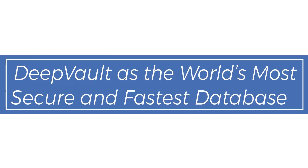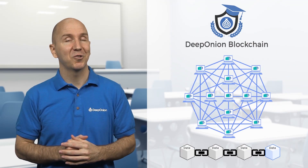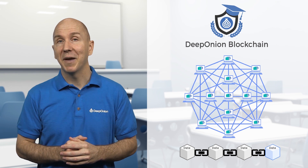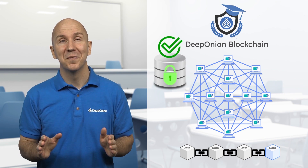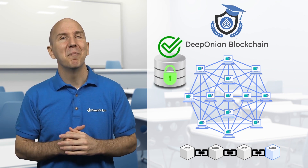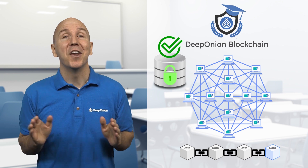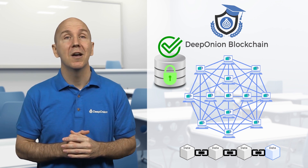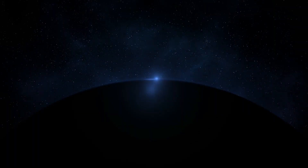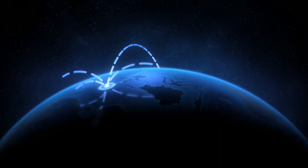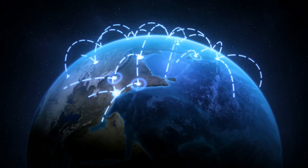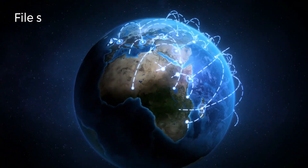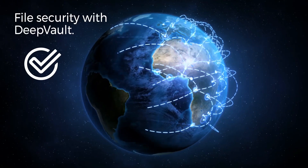DeepVault as the world's most secure and fastest database. The DeepVault blockchain is decentralized and the DeepVault database is fast and secure. Imagine an open database that no one is able to shut down. Your file hashes are stored on the DeepOnion blockchain forever, and the massive distributed network around the world will secure them. With DeepVault, we offer complete file security.